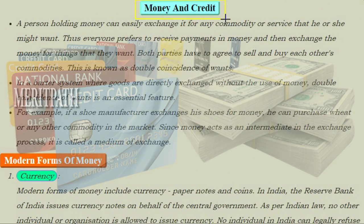Money is the current medium of exchange in the form of coins and notes, whereas credit is the ability of a customer to obtain goods or services before payment, based on the trust that payment will be made in the future. A person holding money can easily exchange it for any commodity or service that he or she might want, so everyone prefers to receive payments in money.